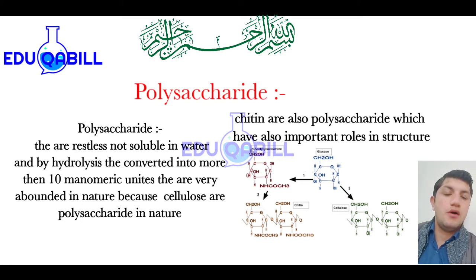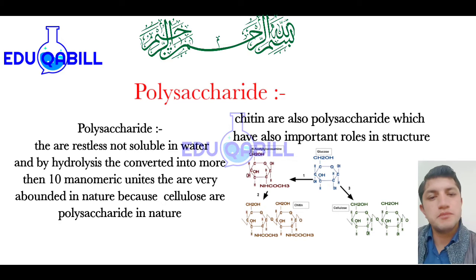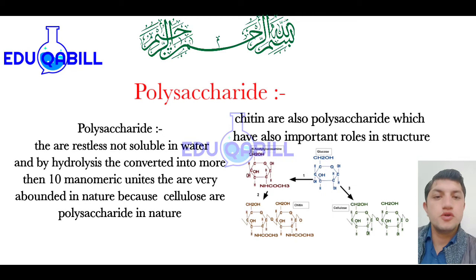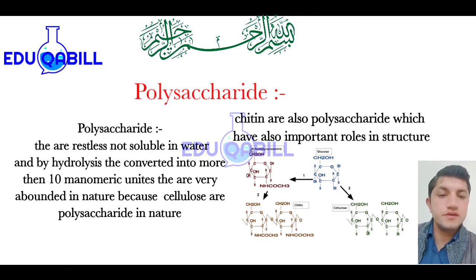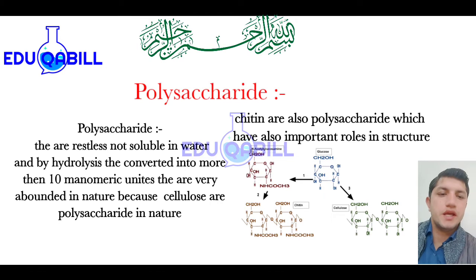Another important point about polysaccharides: the exoskeleton of arthropods is also made from polysaccharides, like chitin. They act as storage molecules in plants in the form of starch. During photosynthesis, when glucose is prepared in the green leaves, the excess glucose is stored in the form of starch.